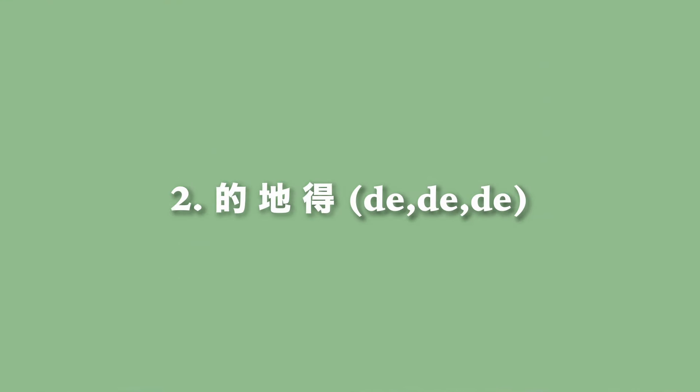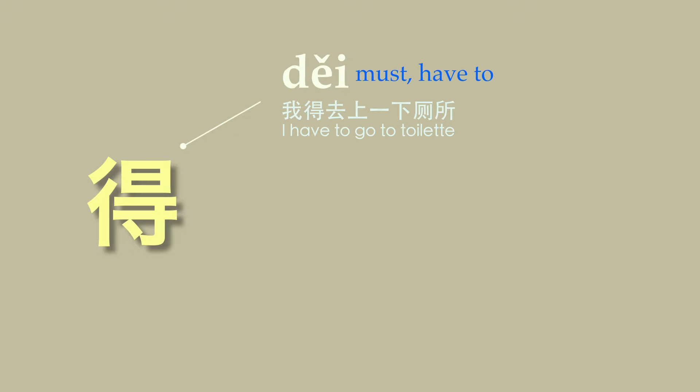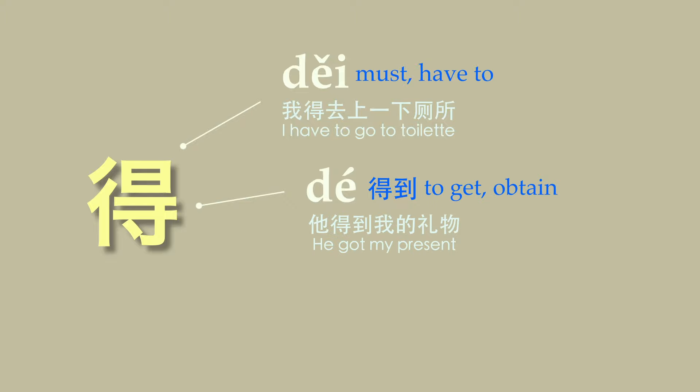When talking about the 的 structure, we might as well cover the other two 的 particles, which at first were very confusing to me. But trust me, you will get the hang of it with enough input. This character has three different pronunciations and thereby three different meanings. The first is 的, which colloquially means something like 'must' or 'have to.' It can also be pronounced as 得 in the word 得到, which means to get or to obtain. But above all, it functions as a verb complement, and I would say the verb complement structure is most important too, because it is used in almost every second sentence.